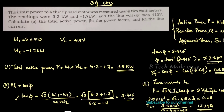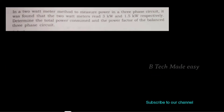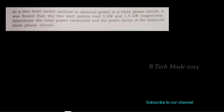Next question. In a two wattmeter method to measure power in a three-phase circuit, it was found that the two wattmeter readings are 3 kilowatt and 1.5 kilowatt respectively. Determine the total power consumed and the power factor of the balanced three-phase circuit. W1 is 3 kilowatt and W2 is 1.5 kilowatt.